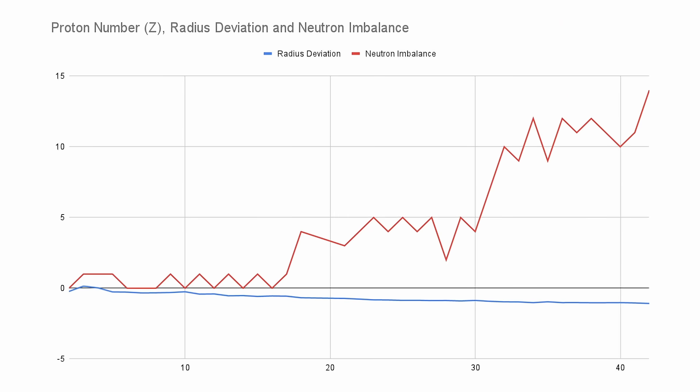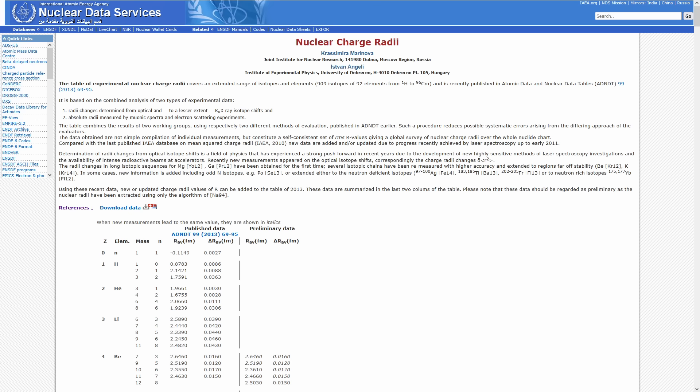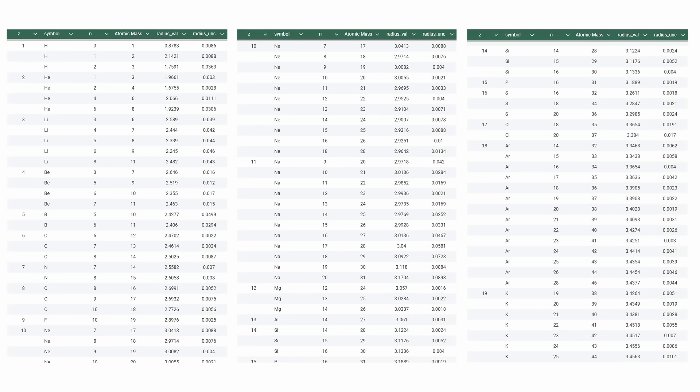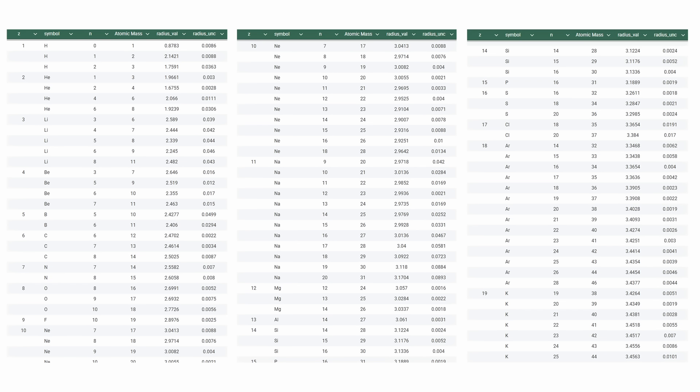While the element-wide trend shows a general contraction of charge radii, a different and more complex pattern emerges when we examine isotopes of individual elements. Unlike the relatively smooth trends seen across elements, the isotopic data presents non-linear fluctuations in charge radius that challenge conventional explanations.